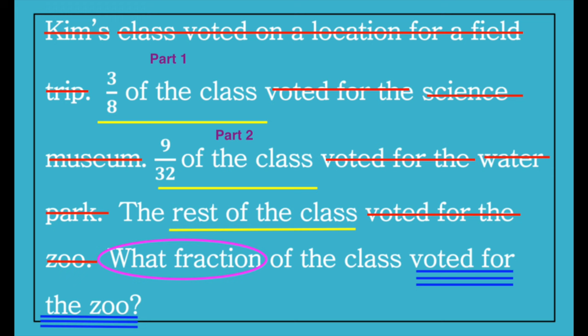In this case, we don't need to know that her name is Kim. We don't need to know that they're going to the zoo. We don't need to know any of that. What we really need to know is that we have two parts and we're needing to find that remaining part to get to the whole.